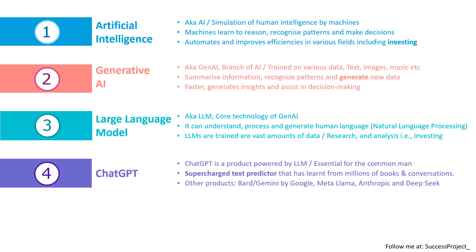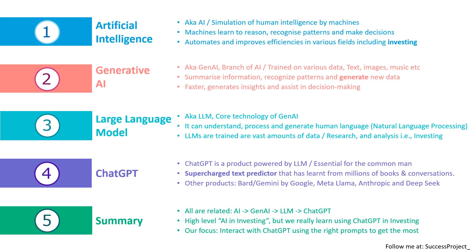So for our course I'll be mainly using ChatGPT for demonstration purposes. To sum up, all four ideas are connected: AI's subdivision is Gen AI, which is dependent on LLM, and this LLM is connected to users through ChatGPT. More specifically, this series is about ChatGPT in investing. In the coming videos we will focus on how to use ChatGPT and the right prompts to get the most out of Gen AI. Thank you very much.